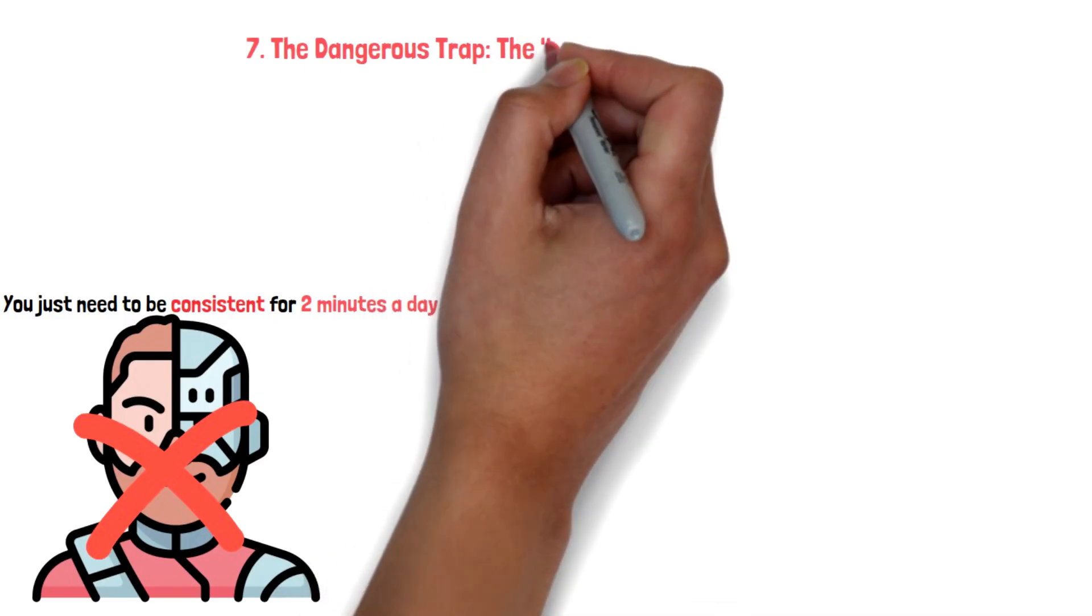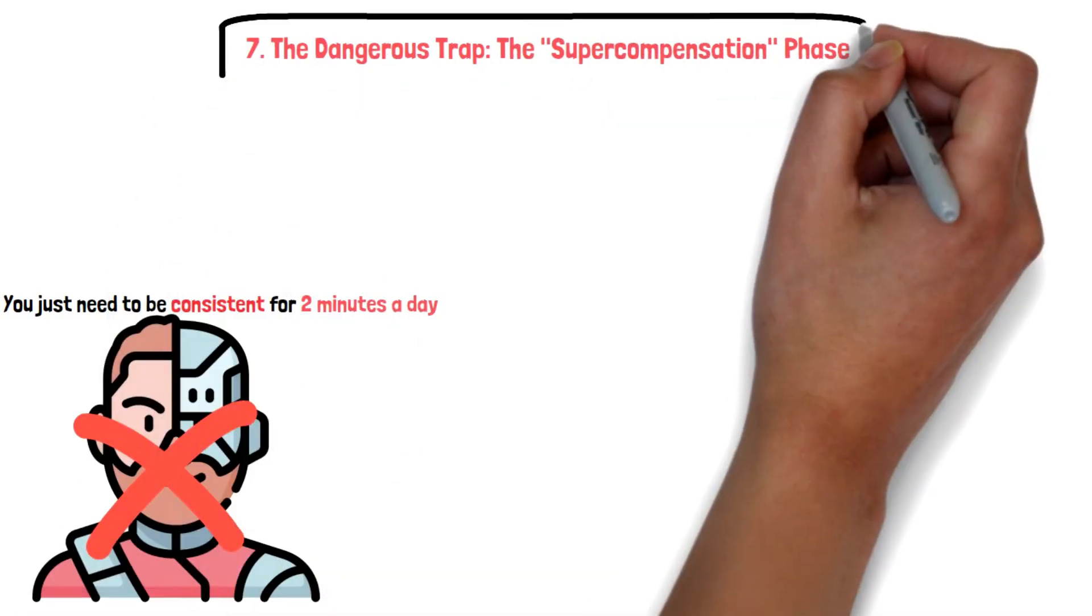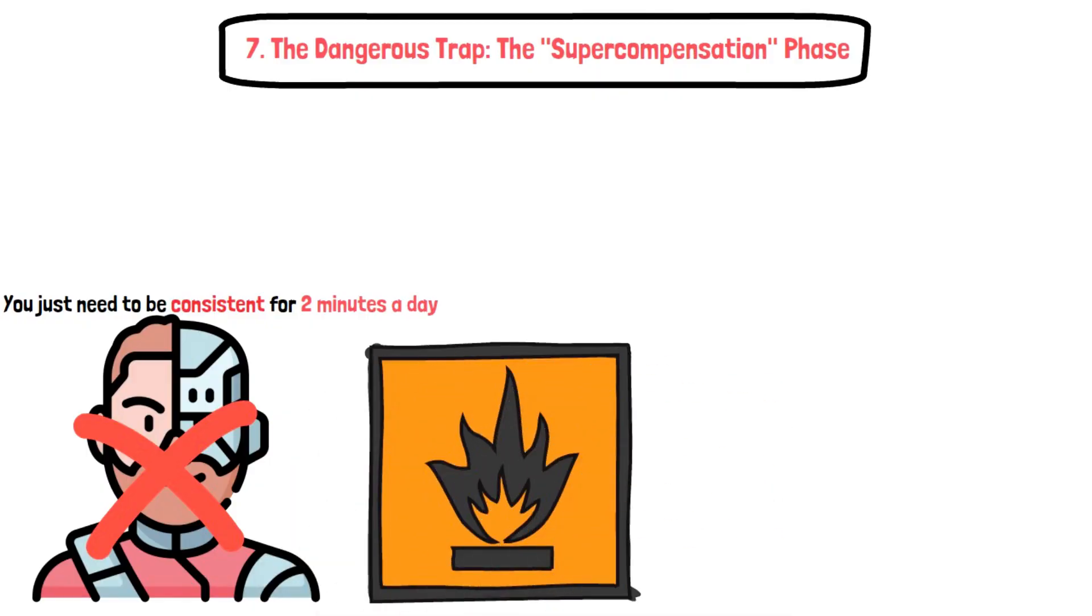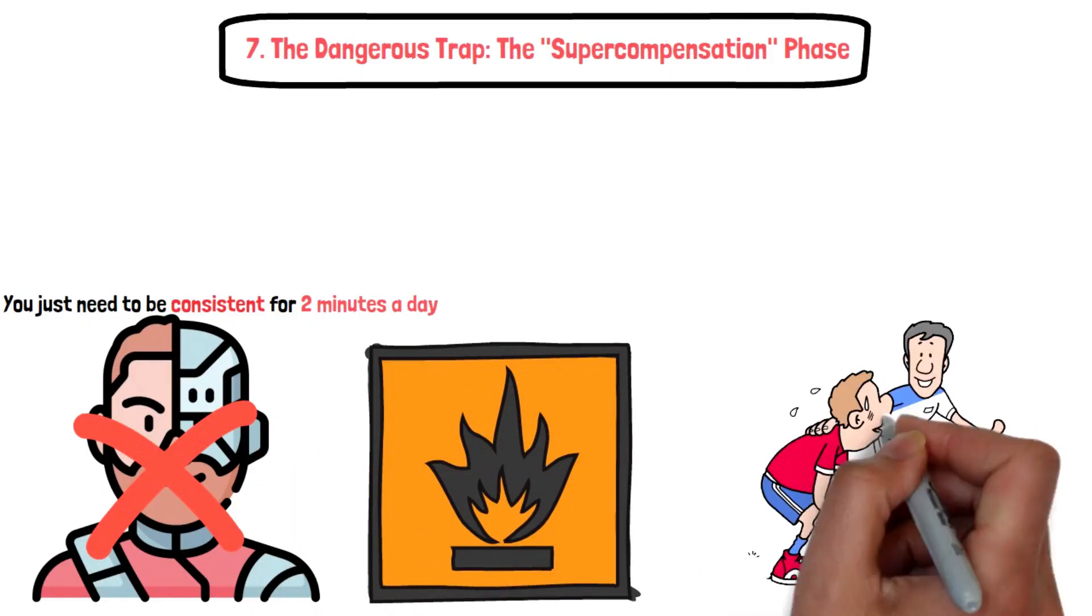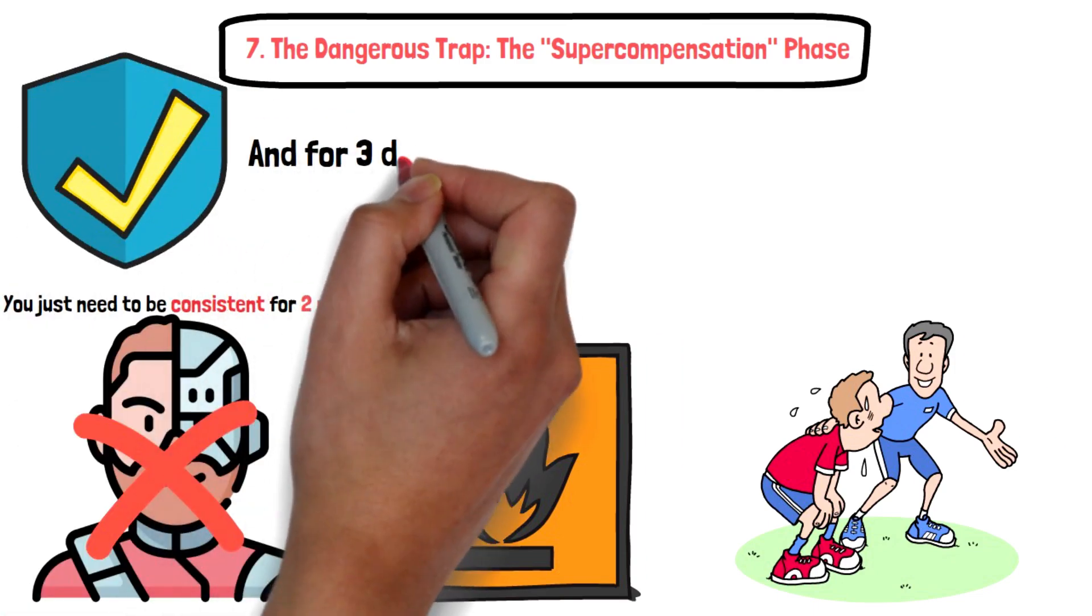Seven, the dangerous trap: the supercompensation phase. Now let's look at the opposite danger. You're in a heavy training block, the data is accurate, and for three days in a row your HRV is low. Your watch screams: rest, unproductive. Should you listen? Not necessarily.